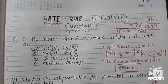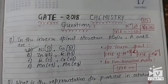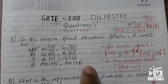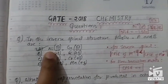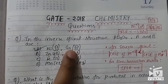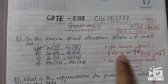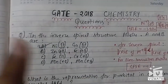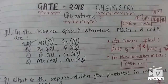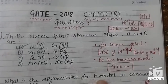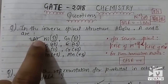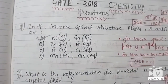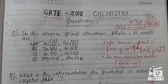A question asked in GATE this year: we were asked, in the inverse spinel structure of AB₂O₄, which pair of A and B is correct? The correct answer was Ni²⁺ and Ga³⁺. The reason is that gallium is a non-transition metal, so its CFSE is 0, while for Ni²⁺ the |CFSE| is 1.2 Δₒ. Since the |CFSE| for the +2 cation (Ni²⁺) is greater, it is an inverse spinel. Thank you for watching.